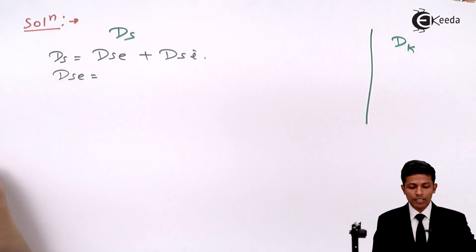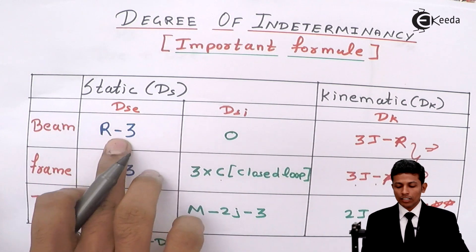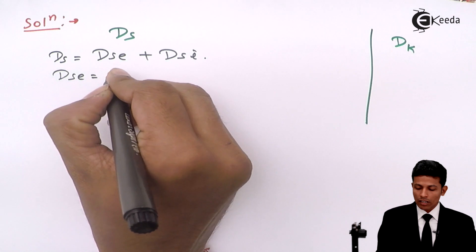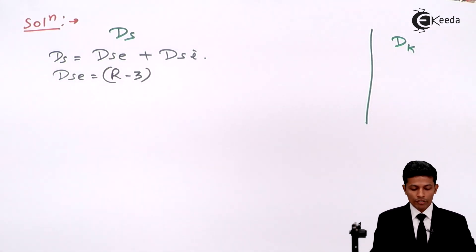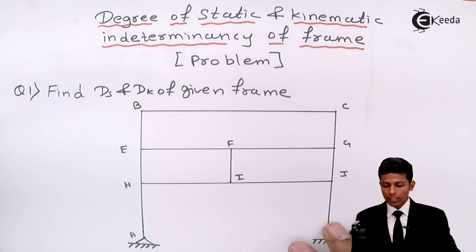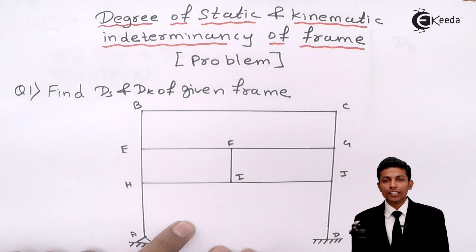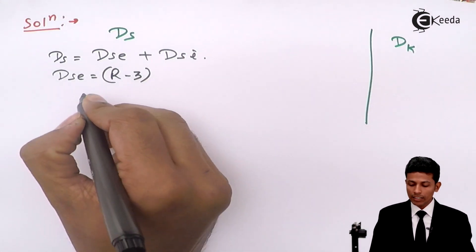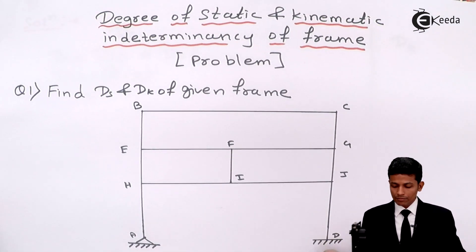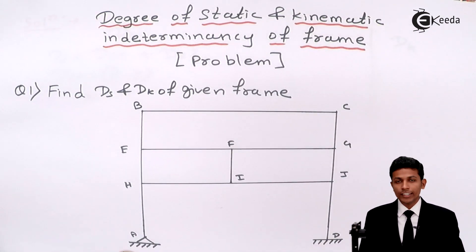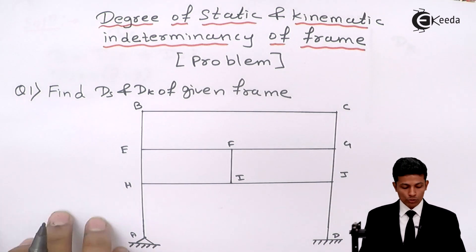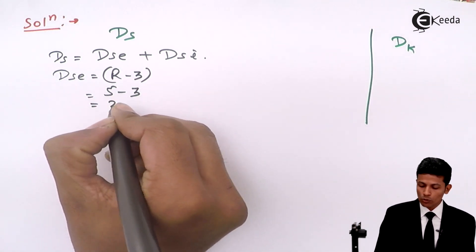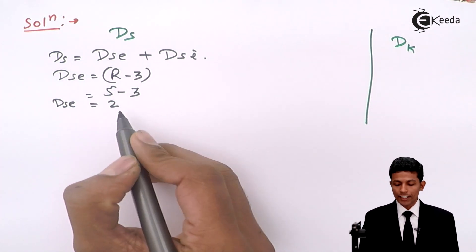DSe is the same for beams, frames, and trusses: DSe = r − 3. There are no internal hinges in this problem, so we don't add the (m' − 1) term. Looking at the supports: this one is fixed (3 unknowns) and this one is a hinge (2 unknowns), so r = 3 + 2 = 5. Therefore DSe = 5 − 3 = 2.